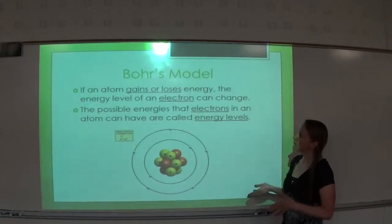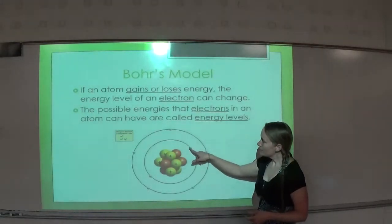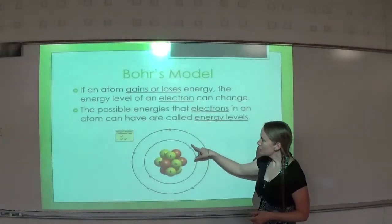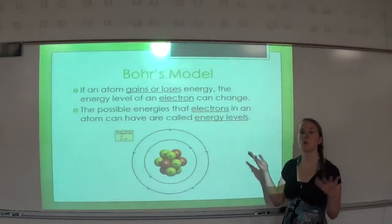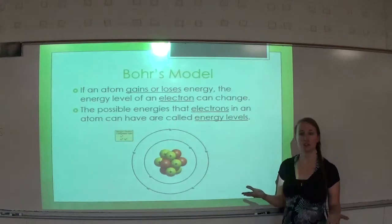If an atom gains or loses energy, the energy level of an electron can change. For example, if this electron gains energy, it can jump up to the next energy level. The possible energies that electrons in an atom can have are called energy levels.